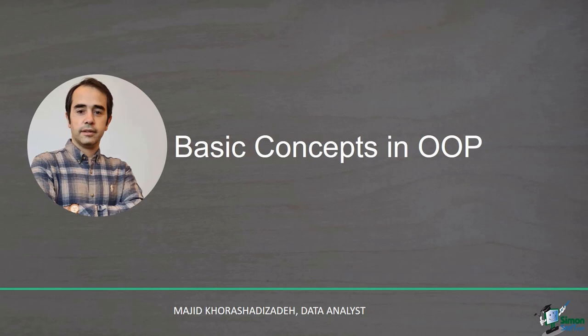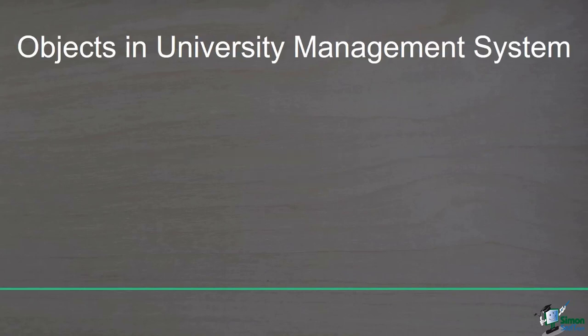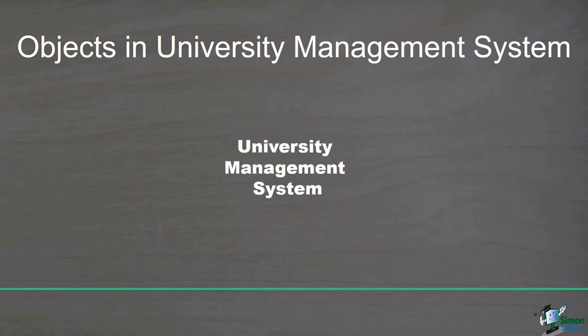Object-oriented programming is a programming paradigm that is based on the concept of objects. In fact, objects are the basic units of object-oriented programming. You might ask: what is an object? Objects are everything in the real world that you can imagine, such as a car, house, students, or anything like this. If it is still confusing, let me show you some examples. Suppose you are going to create a university management system.